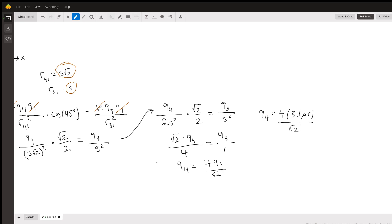We'll combine the left side to give us (√2/4)*q4, and this will equal q3. We can cancel the s^2 because they appear on both sides. Now, isolating q4, we get 4*q3/√2.